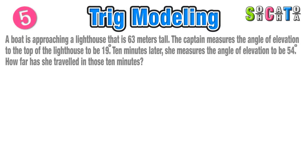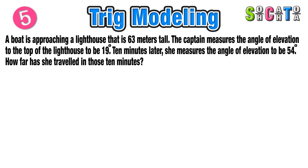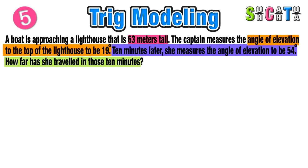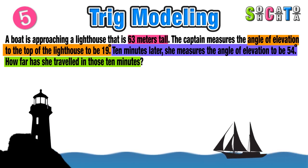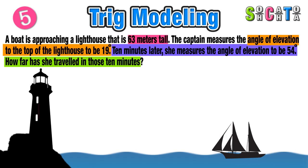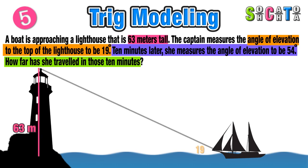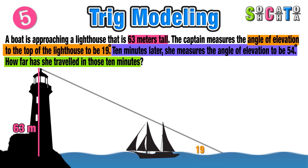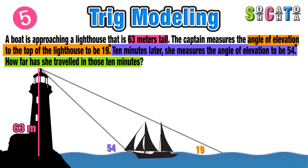Our final trig modeling scenario is the most advanced. A boat is approaching a lighthouse that is 63 meters tall. A captain on the boat measures the angle of elevation to the top of the lighthouse first at 19 degrees. Ten minutes later, as the boat moves closer, the new angle of elevation is 54 degrees. We want to find exactly how far the boat traveled in those 10 minutes.